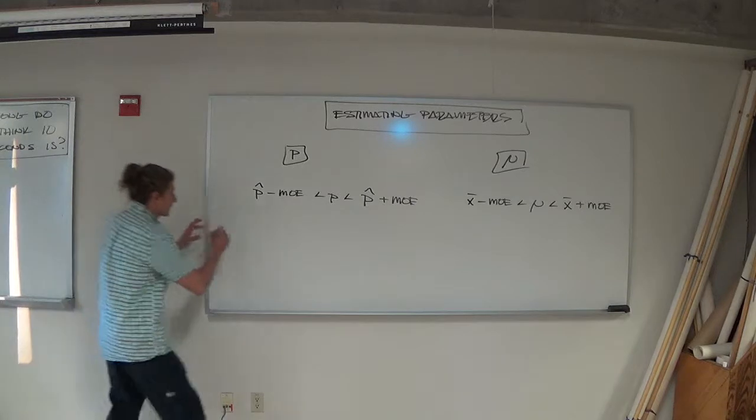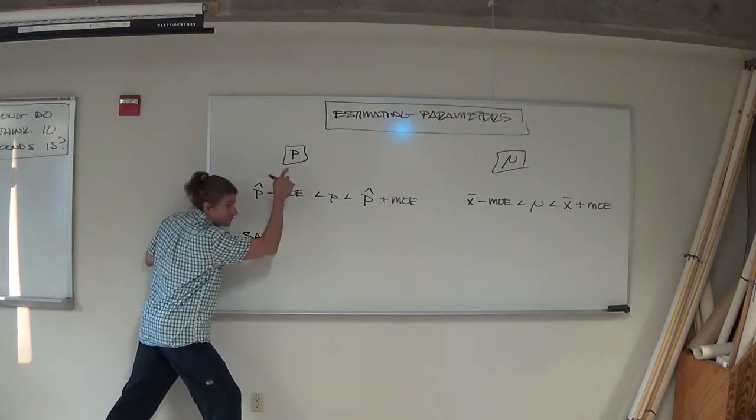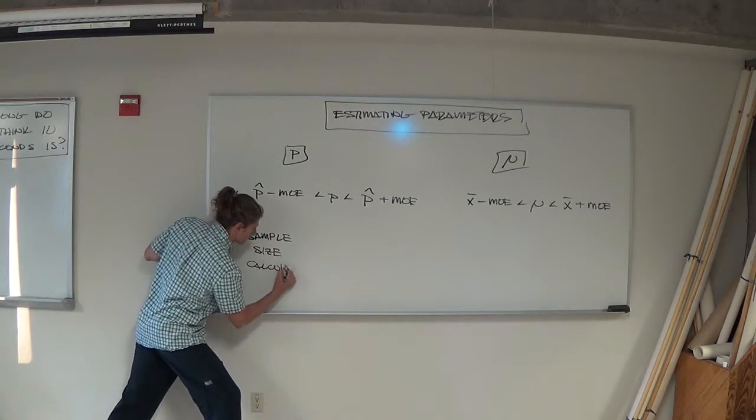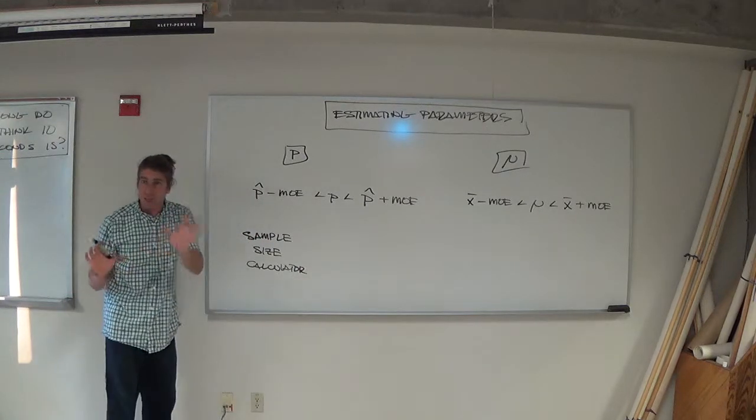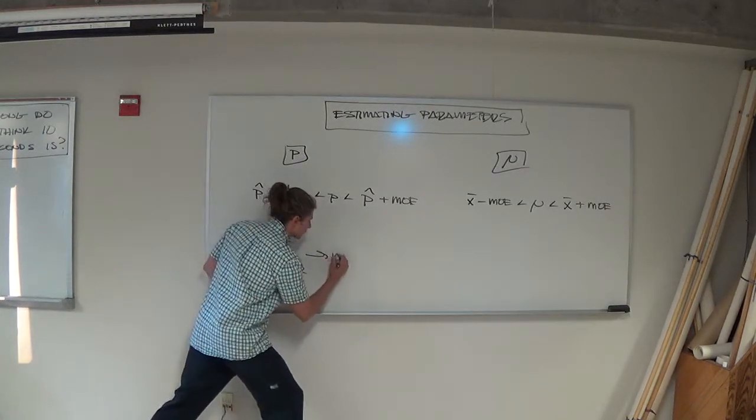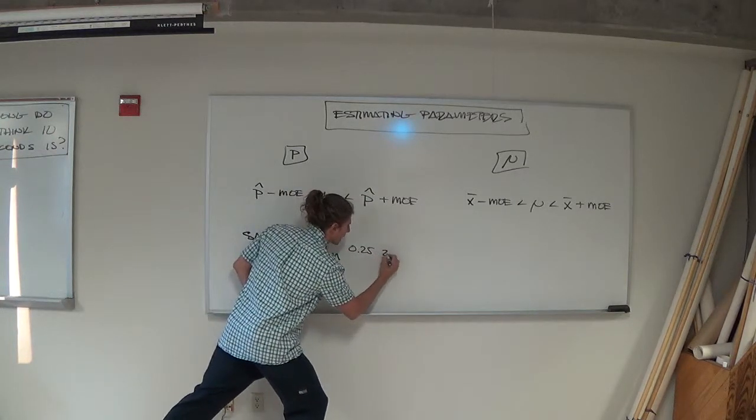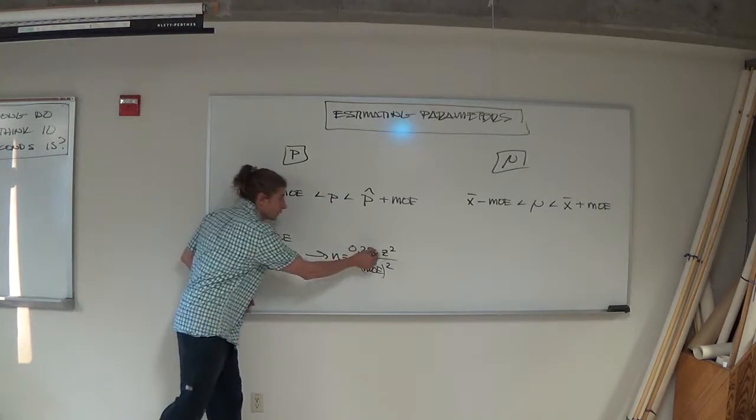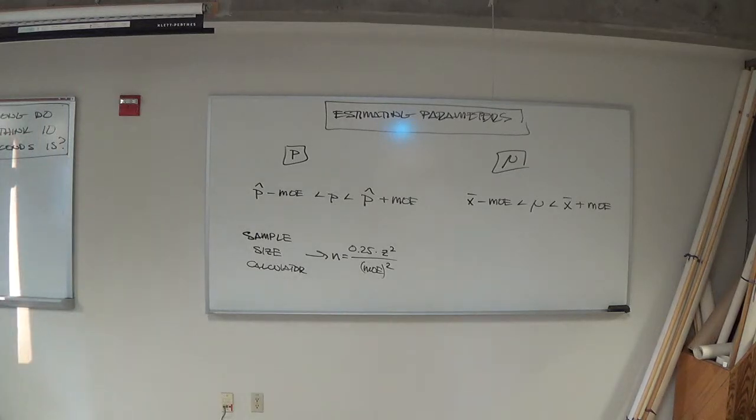The only one that works for is if you're trying to estimate this guy, the sample size calculator. Here's the formula in case you don't have the program or don't want to use it. It's 0.25 times z squared over the margin of error squared. Okay, that's your sample size calculator if for some reason you don't want to use the program I gave you or if you lose it or if you erase it late at night and you don't feel like googling it.